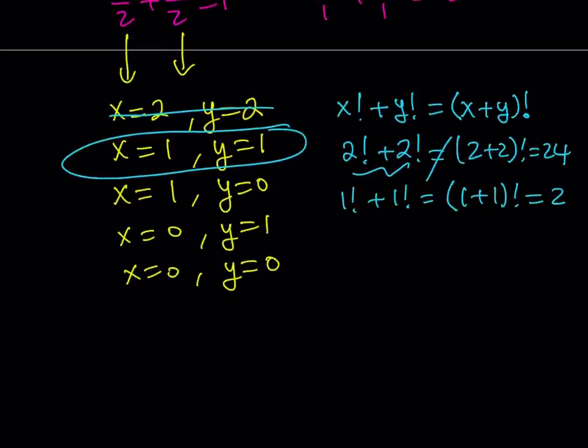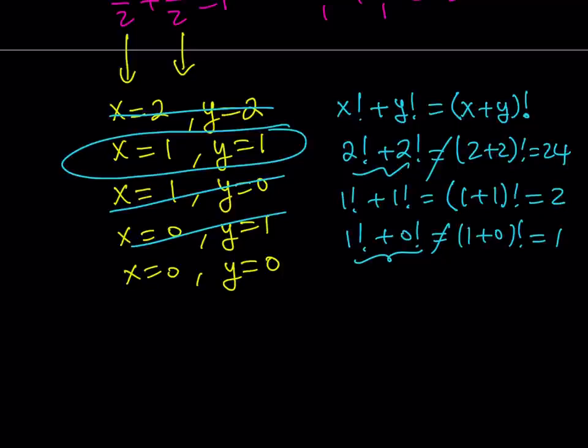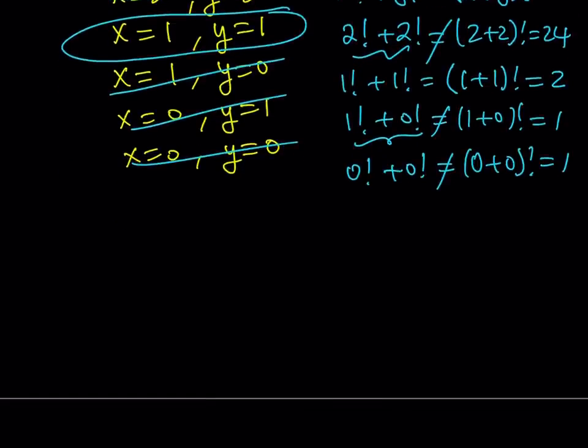Let's continue. How about 1 and 0? Let's try that out. So, 1 factorial and 0 factorial does not give me 1 plus 0 factorial, but this is equal to 1, this is equal to 2, so they're not equal. So, this is not going to work. Obviously, for the same reason because of the symmetry, 0 comma 1 is not going to work either. How about 0, 0? Well, 0 factorial plus 0 factorial is equal to 2, but 0 plus 0 is 0, 0 factorial is equal to 1. So, these are not equal either. So, the only solution we end up getting is 1 comma 1.